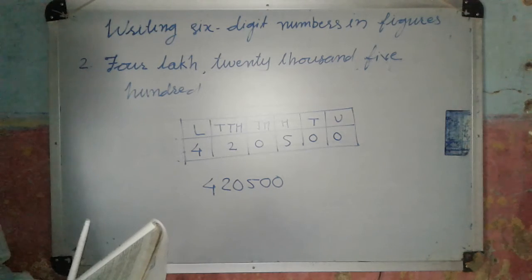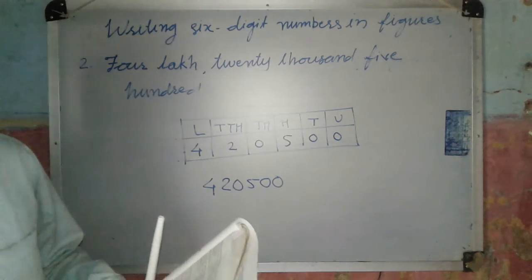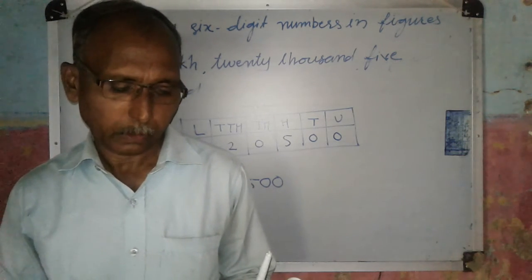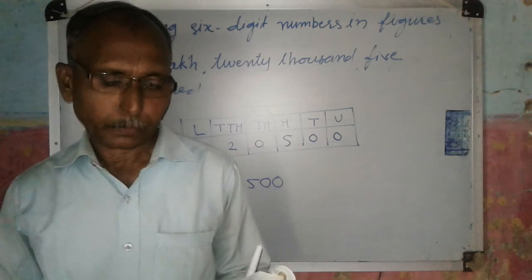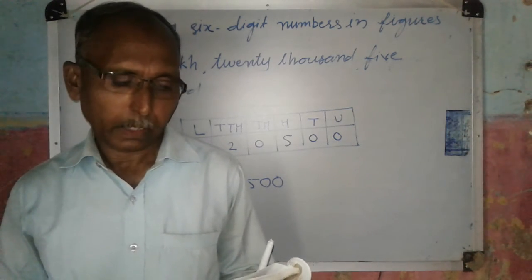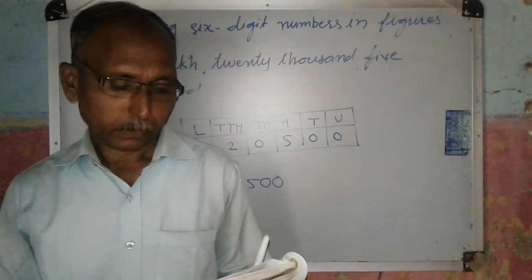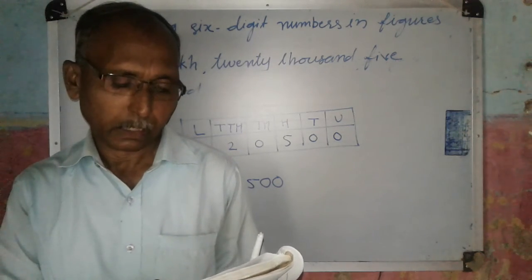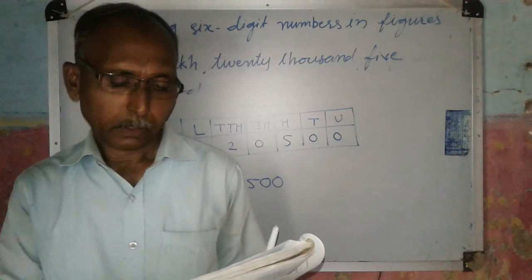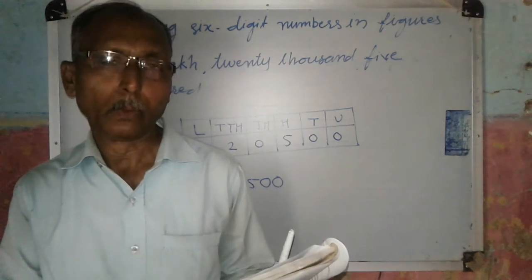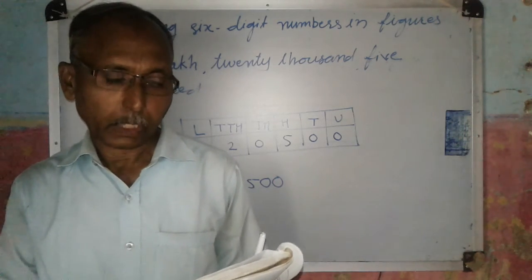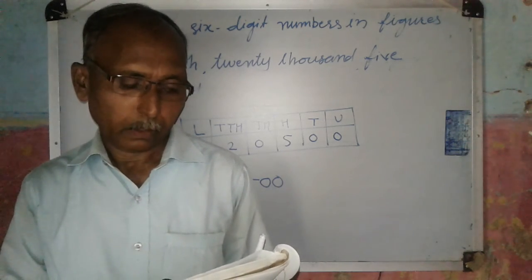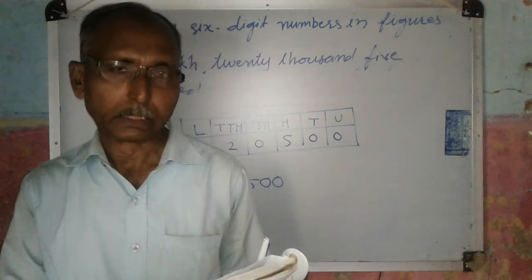Now see here, in problem set 3: question number 1 — read the numbers and write them in words; question number 2 — read the numbers and write them in figures; question number 3 — make five 6-digit numbers using any of the digits zero to nine only once. Try to solve this problem set, and next time we will learn about introducing 7-digit numbers.